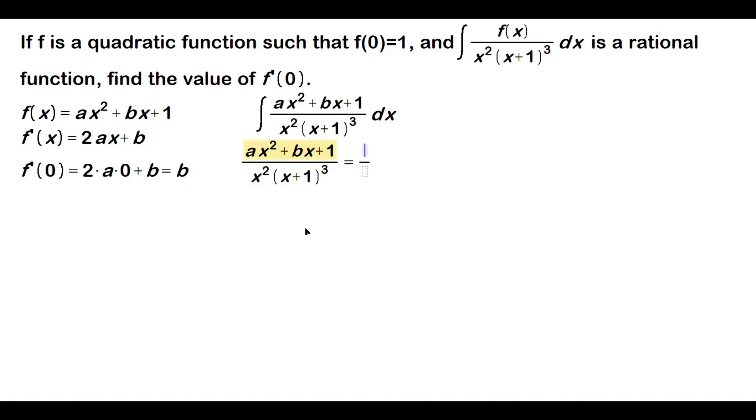On the right side, I'm going to have capital A, not lowercase a, over x plus capital B over x squared. So just apply here the ascending powers of x, divided by x squared, and so on.